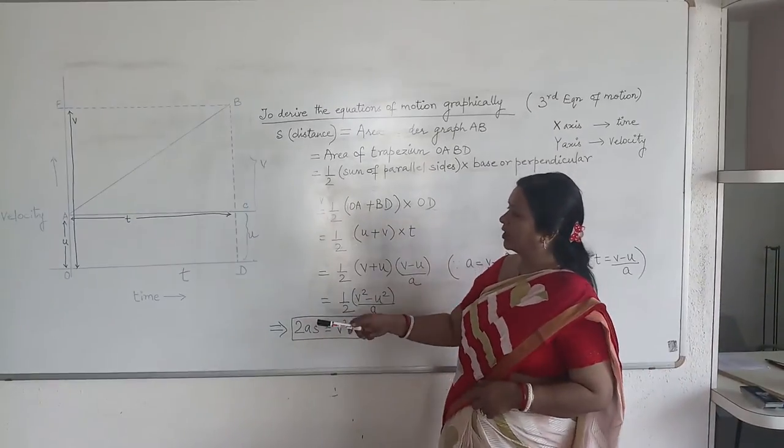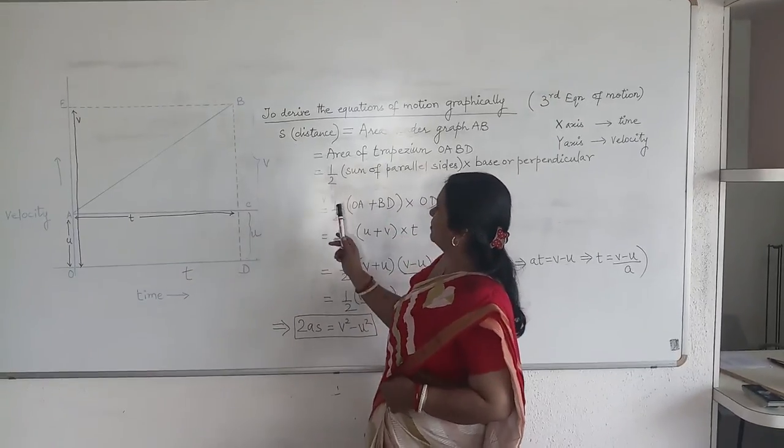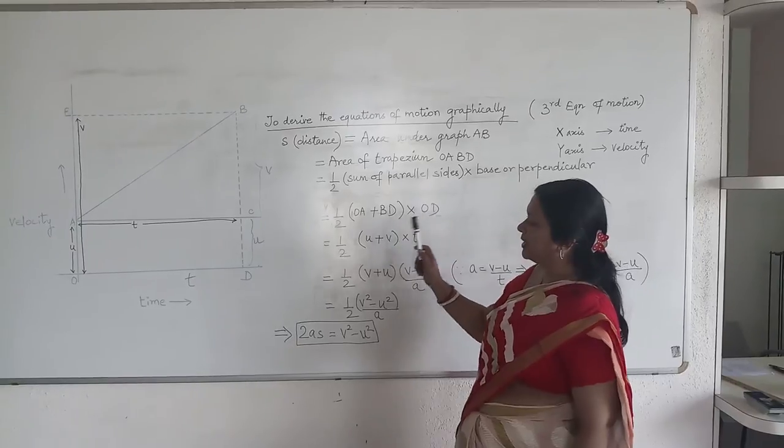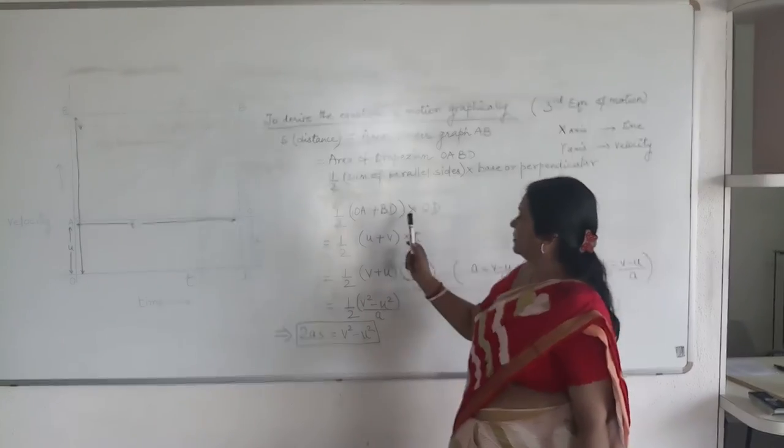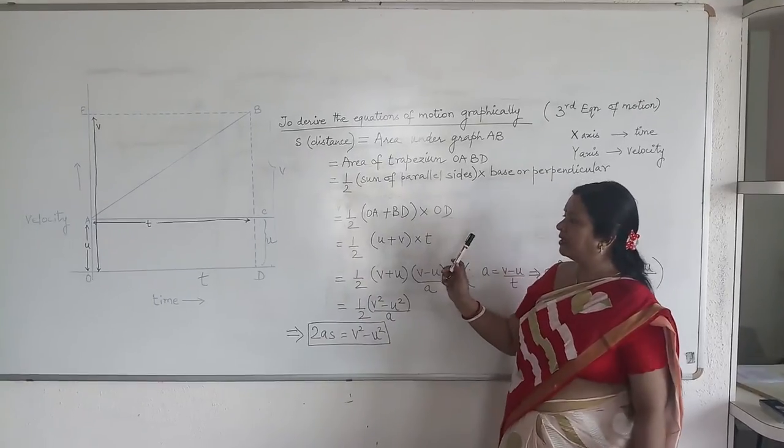So half. What are the parallel sides? This OA and DB are the parallel sides. So we do the sum of parallel sides and the perpendicular is this OD. So we write OD. Now we substitute in terms of V, U and T.